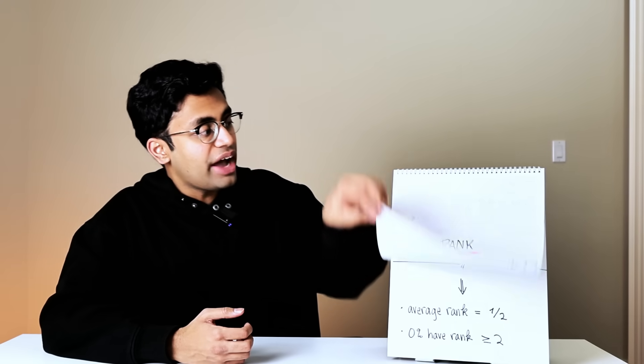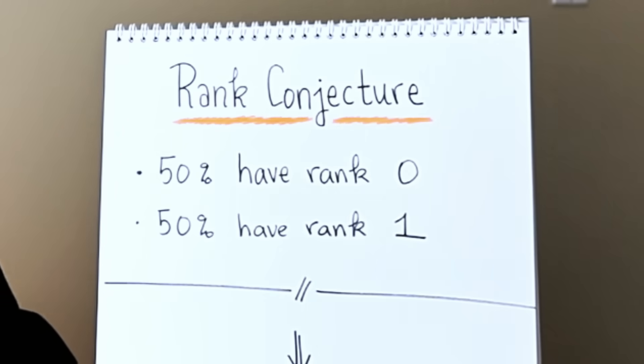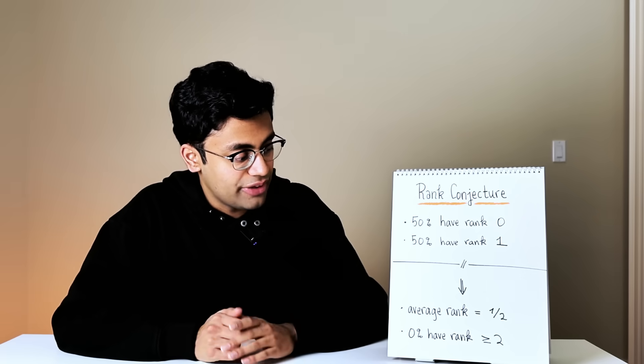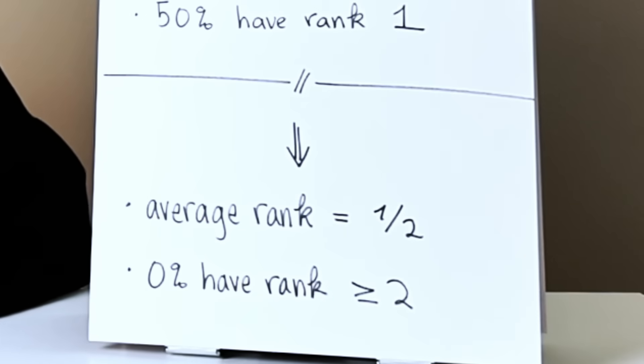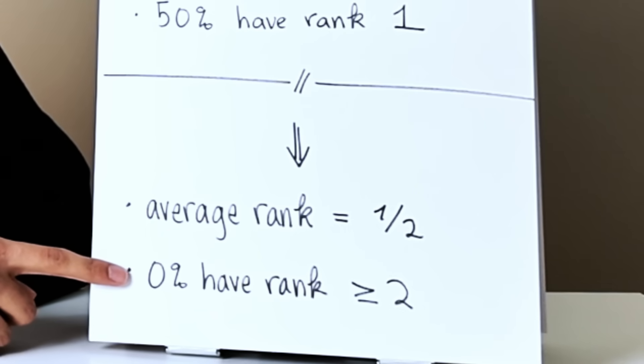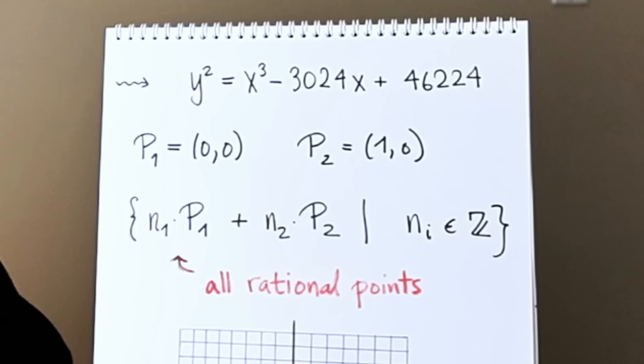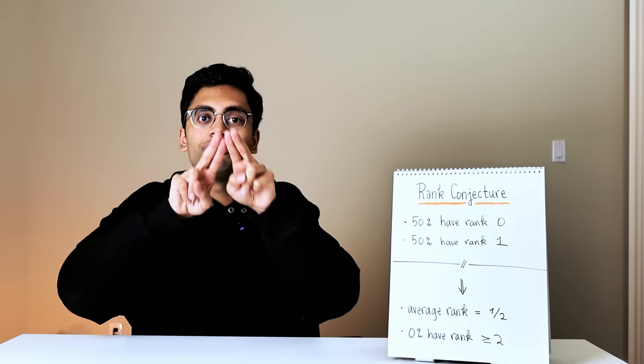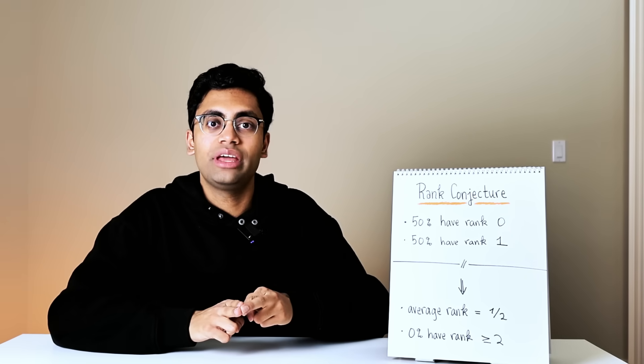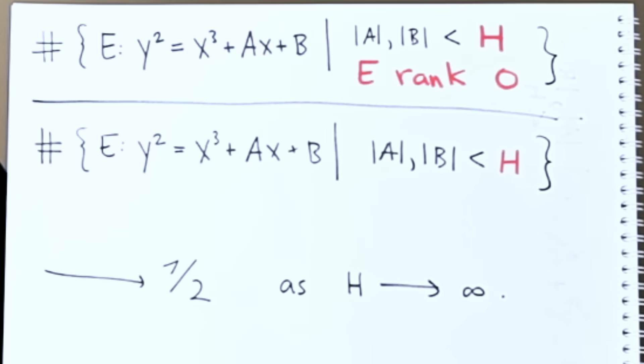With this we can finally state the rank conjecture, which is the problem this entire video is about. It says very simply: 50% of elliptic curves have rank zero and 50% of elliptic curves have rank one. This has two consequences. First, the average rank of all elliptic curves is one half. And secondly, zero percent of elliptic curves have rank bigger than or equal to two. Now this does not mean there are no elliptic curves of rank two and up - I just gave you an elliptic curve of rank two. In fact, it's known there are infinitely many elliptic curves of rank two. However, as a proportion of all elliptic curves, they give zero percent.